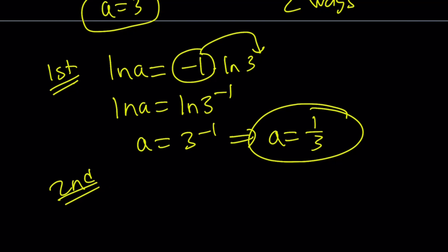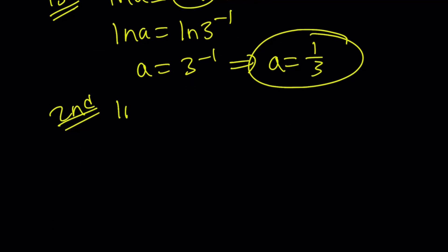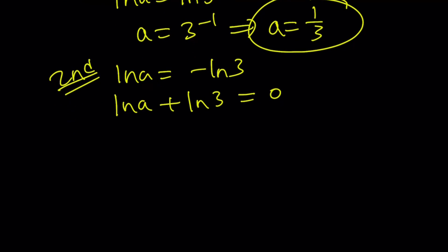The second approach for finding the value of a from here is, remember, our equation is ln a equals negative ln 3. I'd like to put both of them on the same side. So, add ln 3. You get 0. Using properties of logs, remember, if you have a sum of logs, you can write it as a log of a product. So, ln 3a equals 0.